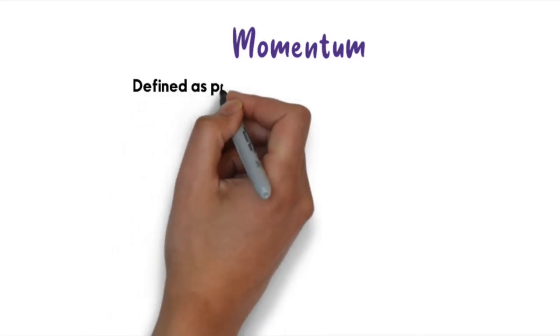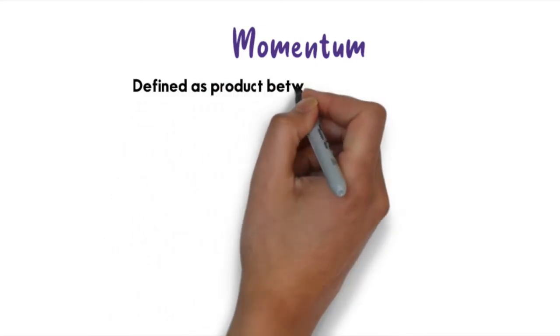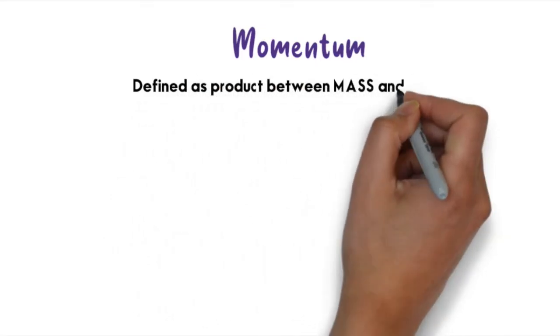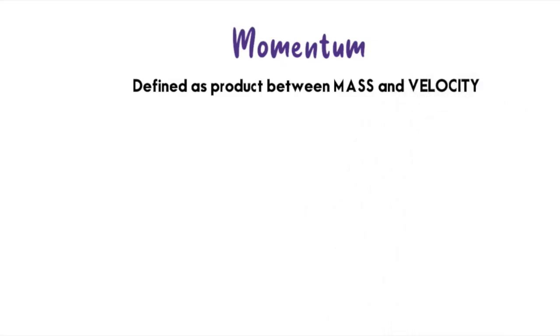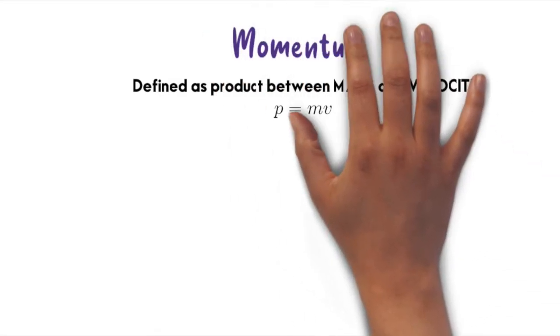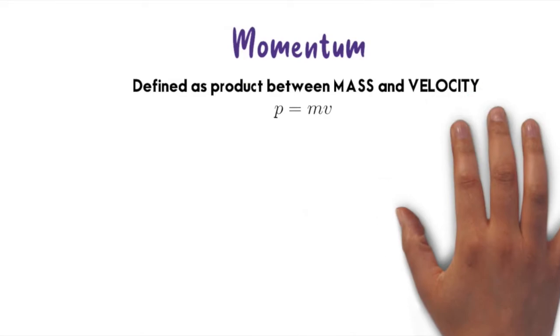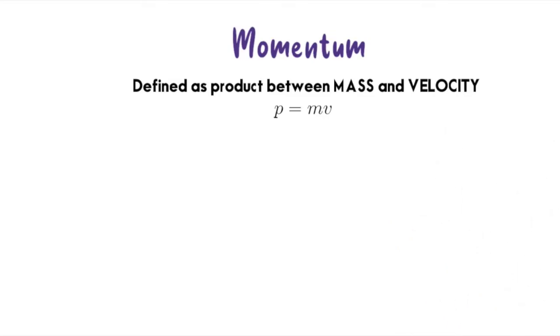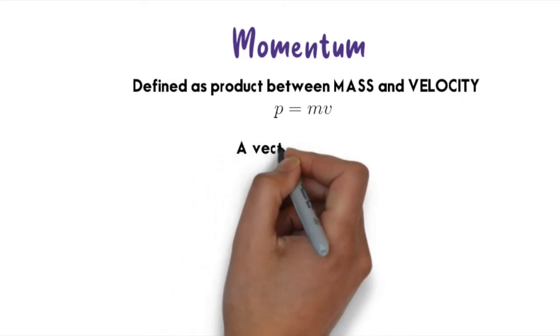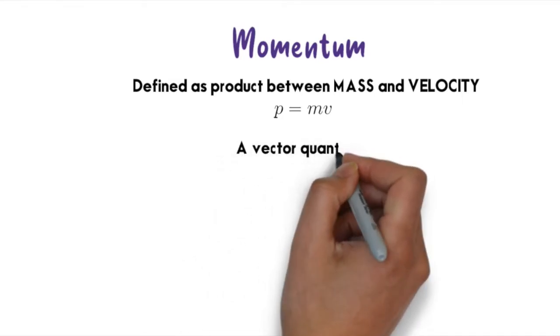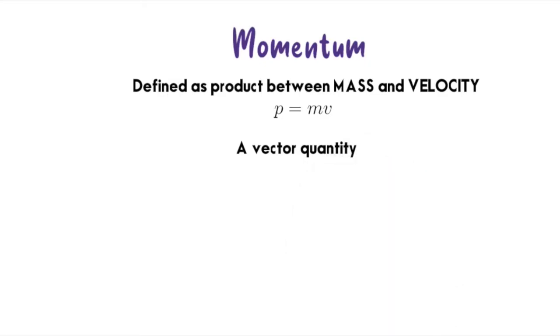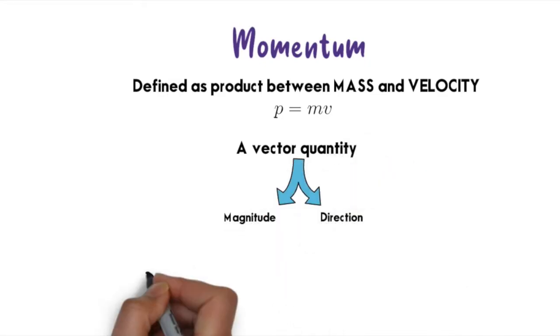We can define it as the product between mass and velocity, or as mass in motion. This means how fast an object moves and how heavy an object is will all influence the momentum. Momentum can be expressed as lowercase p, where p = mv. It is a vector quantity that has magnitude and direction, and the unit is kg·m/s.